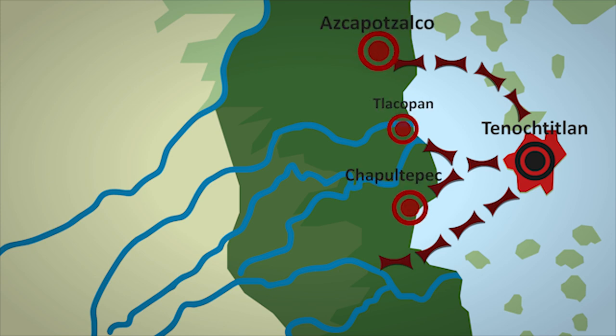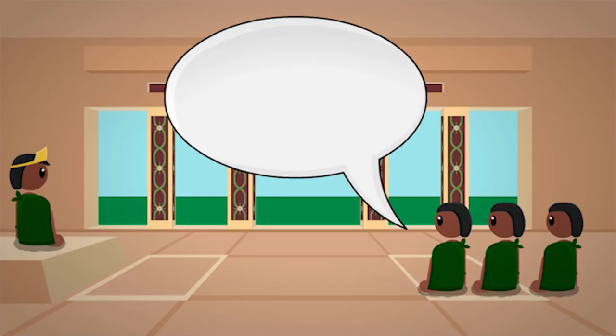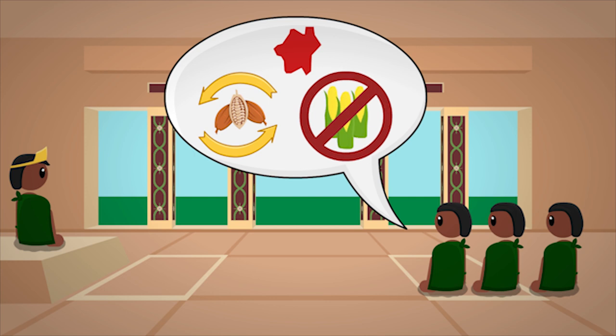These towns were part of the kingdom of Azcapotzalco, and these towns were being taxed in exchange for protection. But now here was a group of people who had recently settled an island, benefitting from the safe trade provided by the kingdom of Azcapotzalco, and yet paid no taxes. This seemed unfair to many.